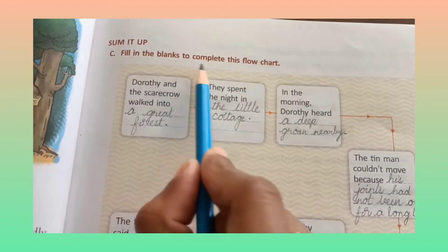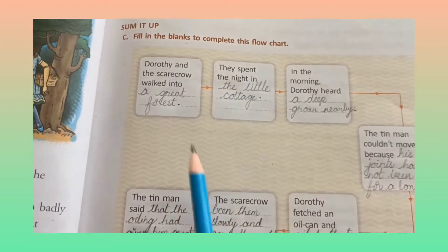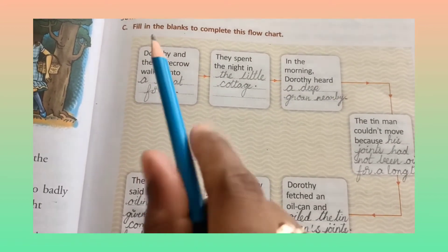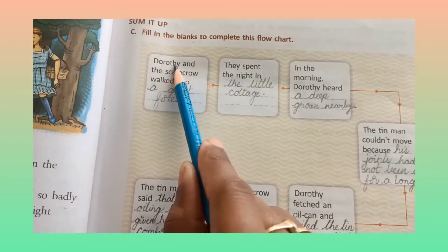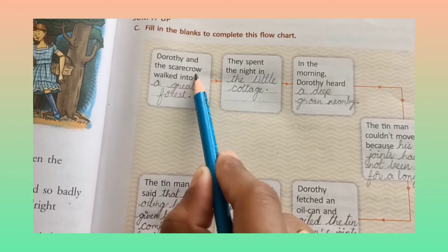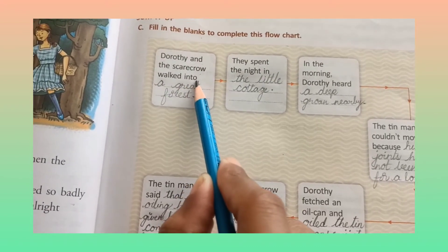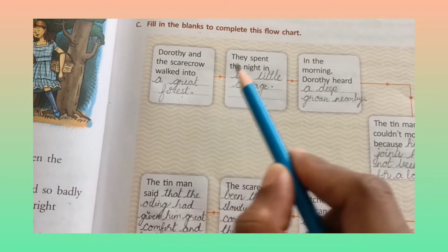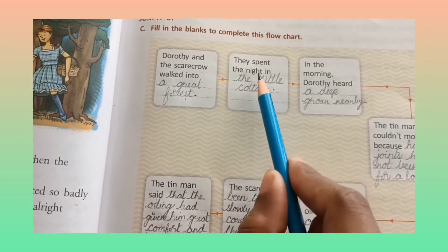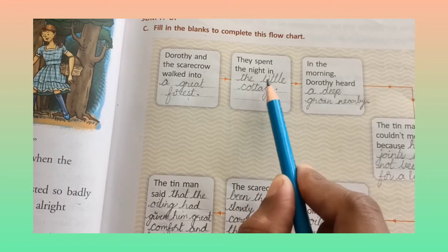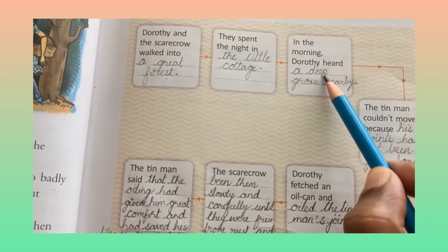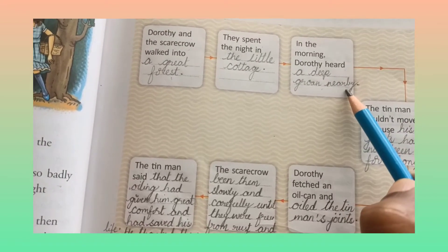Fill in the blanks to complete this flowchart. Here they have given a flowchart and we have to complete the given blanks. Let us see. Dorothy and the scarecrow walked into a great forest. They spent the night in the little cottage. In the morning, Dorothy heard a deep groan nearby.